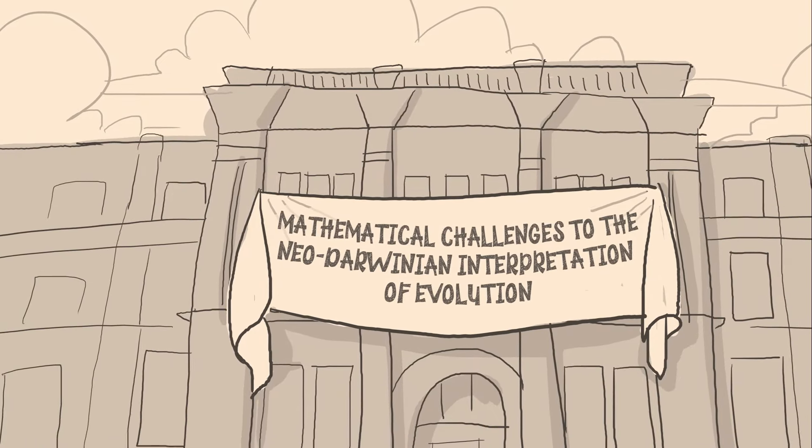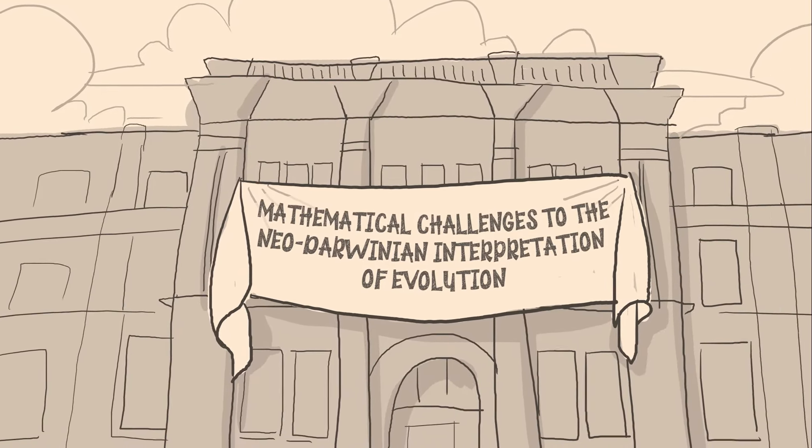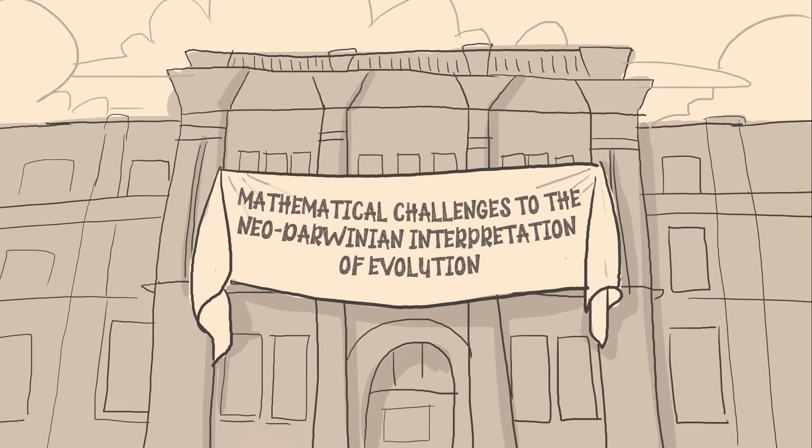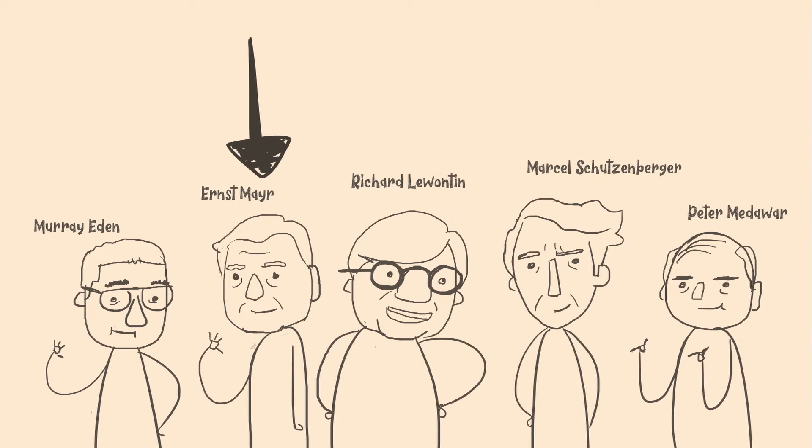Philadelphia, 1966. A bunch of math nerds got together, and they started rocking the evolutionary boat. We're talking bigwigs like MIT's Murray Eden, Harvard's Ernst Mayer, Richard, Richie Rich Lewontin, French mathematician Marcel Schutzenberger, and the one, the only, the Nobel Laureate himself, Sir Peter Medawar.